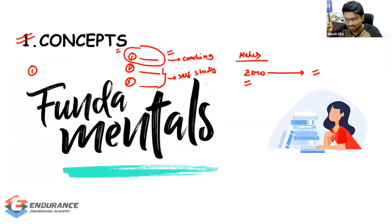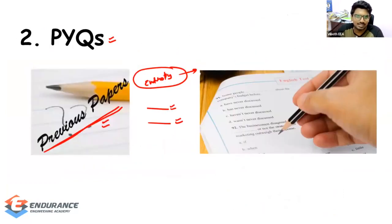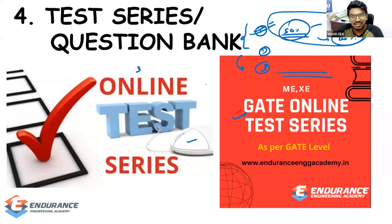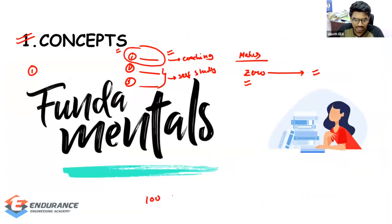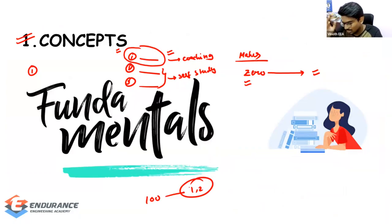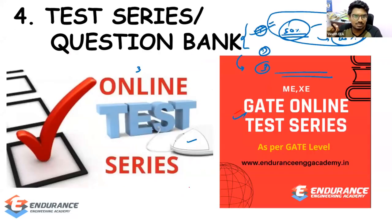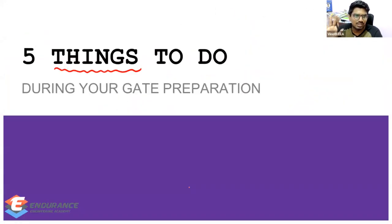To summarize: first, learn concepts — either through a classroom, online course, or standard book, your choice. Second, practice previous year questions. Third, create short notes — necessary, but many students especially beginners skip this. Fourth, do test series — again necessary. Fifth, periodical revision — necessary. Each and every step is important. Skipping any one of them will affect your rank. That is all about the five steps you need to follow when preparing for the GATE exam.